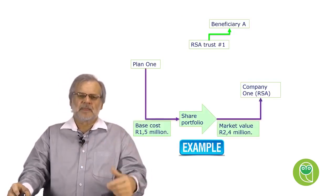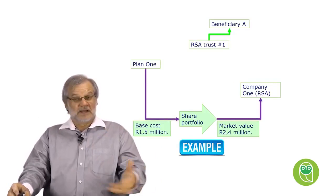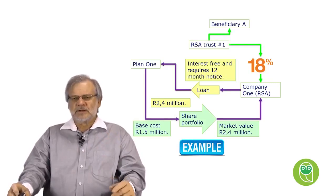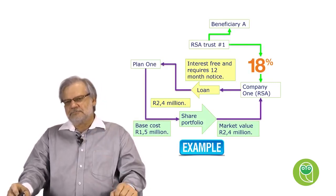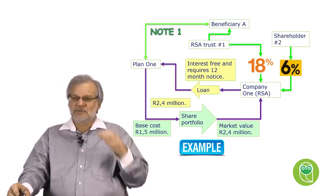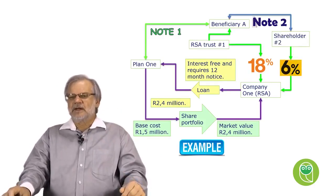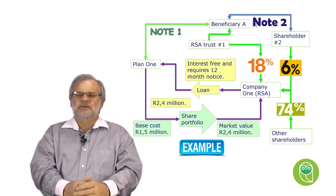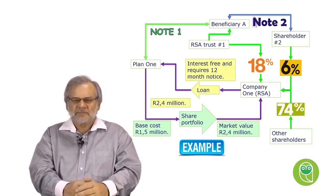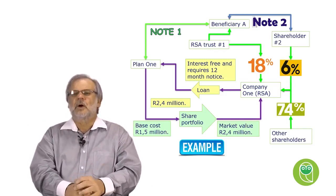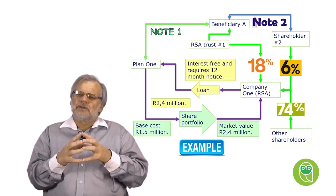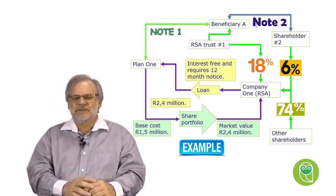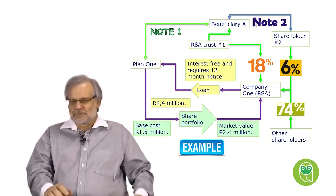We've got a planner who sells an asset to a company by way of a loan account, interest-free, requiring a 12-month notice. The trust has an 18% interest in the company, and another shareholder has a 6% interest in the trust. The balance works out to 76%. What is important is the 18% and 6%. There's another 2% shareholder that we don't need to identify — irrelevant to the scenario.